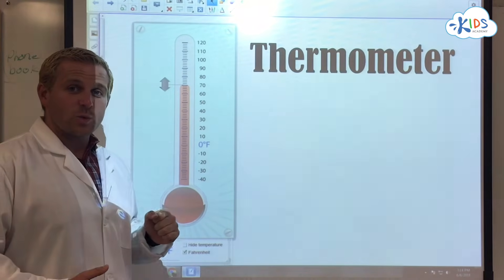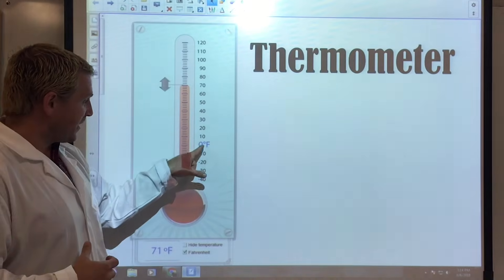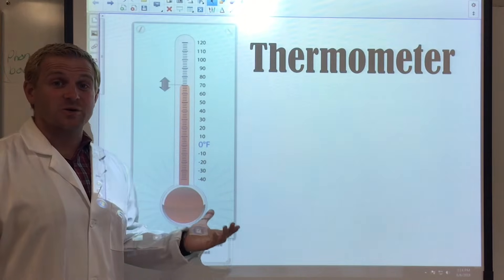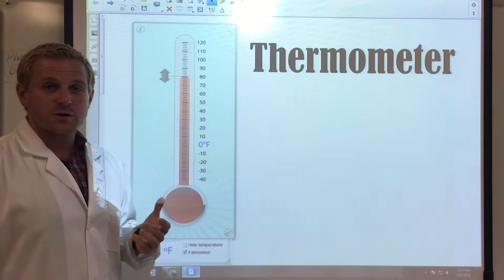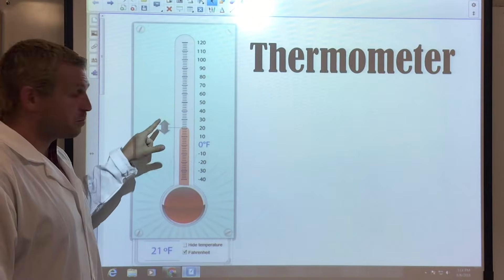When we use a thermometer, we, in America, measure in degrees Fahrenheit, which we use an F for. So you might have heard that it's going to be 80 degrees outside, which means it's pretty warm. Or you might have heard that it's going to be 20 degrees outside, which is pretty cold.